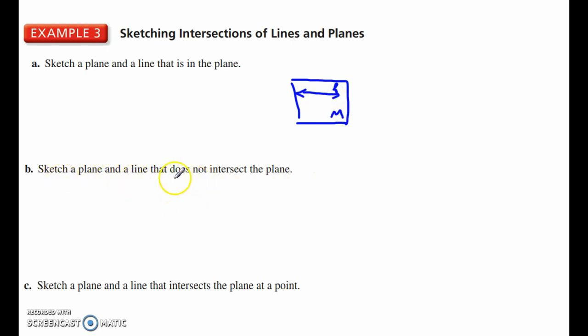Alright, sketch a plane and a line that does not intersect the plane. So we have a plane here, this is plane M, and then parallel to that, up here, we have line L. This does not intersect this plane.